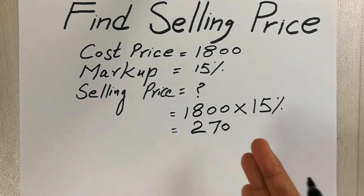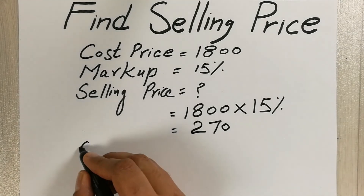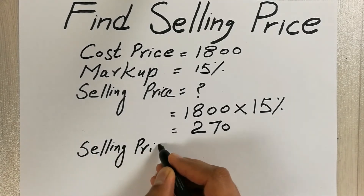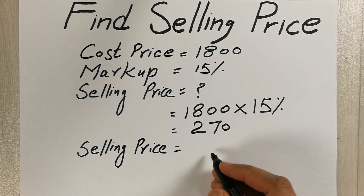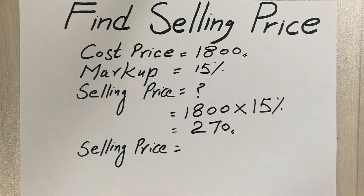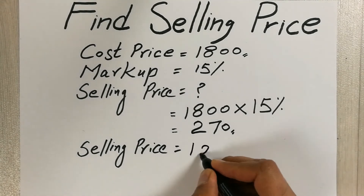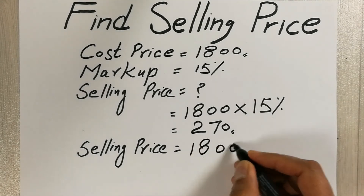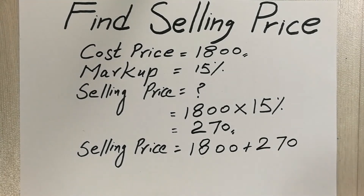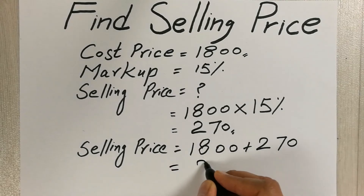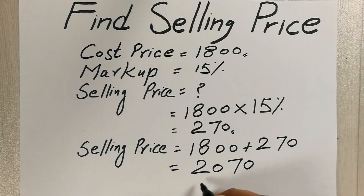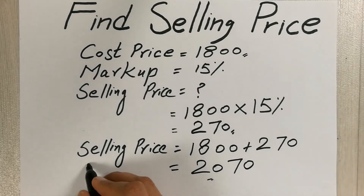In the next step we have to find out the selling price, which is now very simple. To find out the selling price, we add 1800 with 270 — so 1800 plus 270. Our answer will be 2070 dollars, or rupees, or whatever currency you want. So this is our selling price.